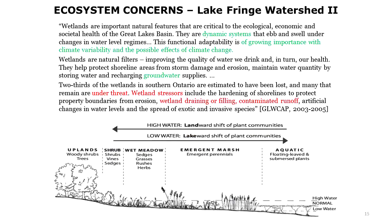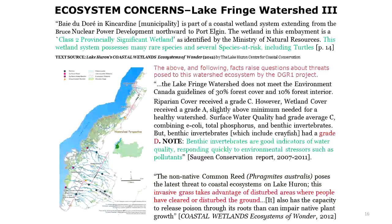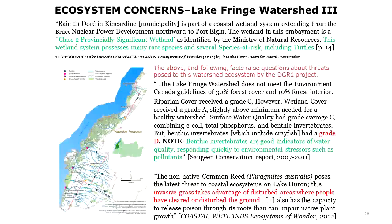Bay du Doré in the municipality of Saugeen Shores is part of the coastal wetland system and is related to the DGR project — it's all interconnected. There are rare species and species at risk in this area, including turtles. I haven't seen that mentioned specifically in the OPG documents. I recall reading once in a technical report last year that they only found one turtle, and the implied conclusion was that turtles aren't that important because only one was seen. But that's exactly why it is important — turtles are disappearing, they are species at risk, and we need to be concerned about all species, not just a few.